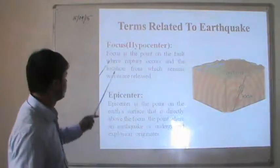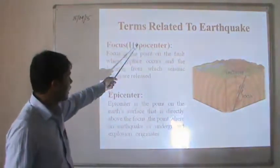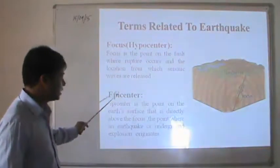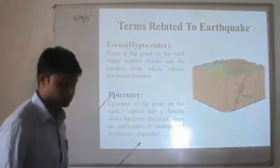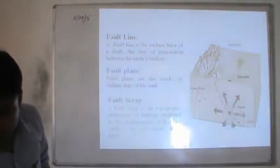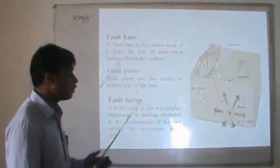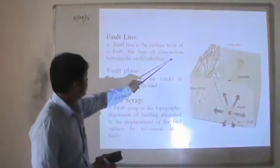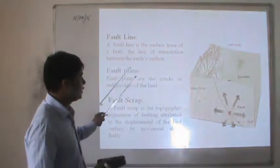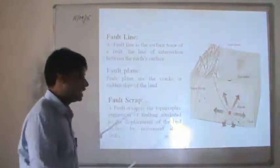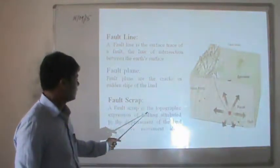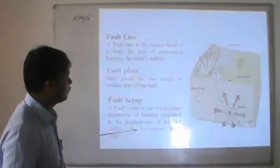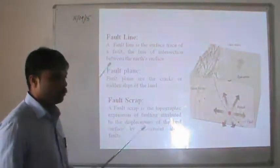Terms related to earthquake: Focus, also known as hypocentre, is the place along the fault plane where the fault happens. Epicentre is the point directly above the focus. Fault line is a line along which a fault has happened, representing the intersection with the Earth's surface. Fault plane is the plane along which slipping occurs. Fault scarp is the topographic expression of faulting due to displacement of the land surface by movement along the fault.